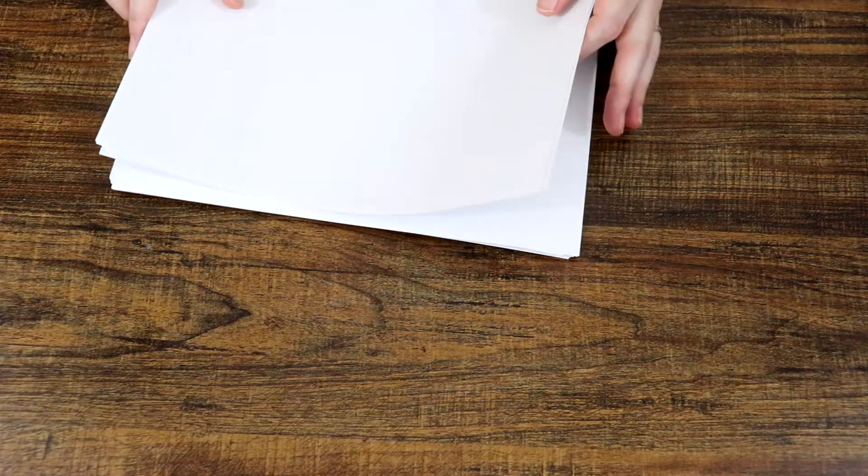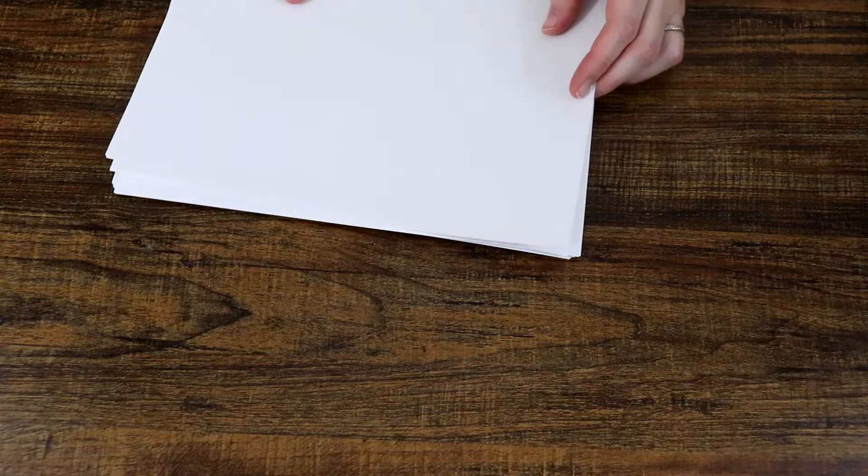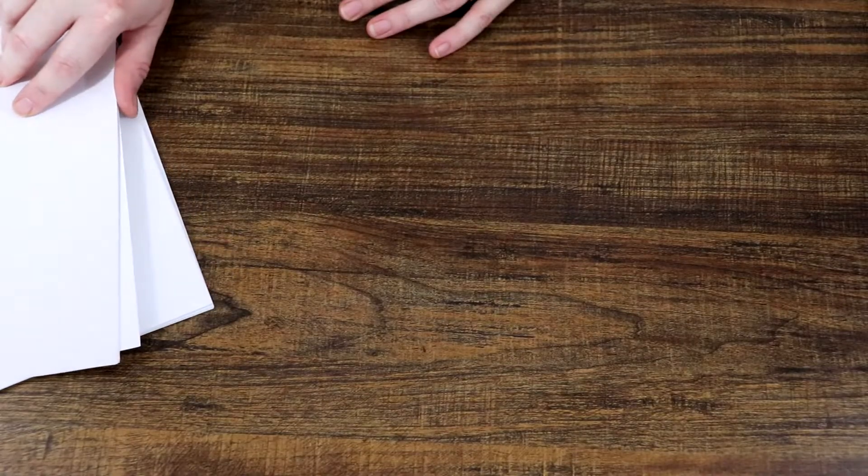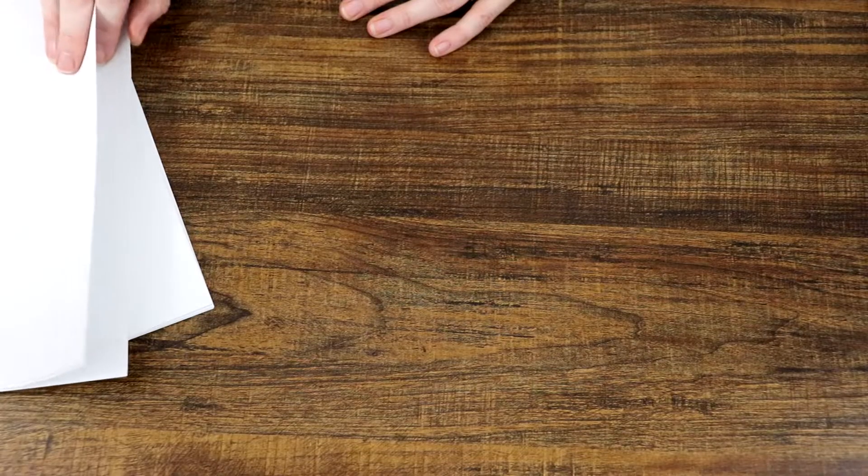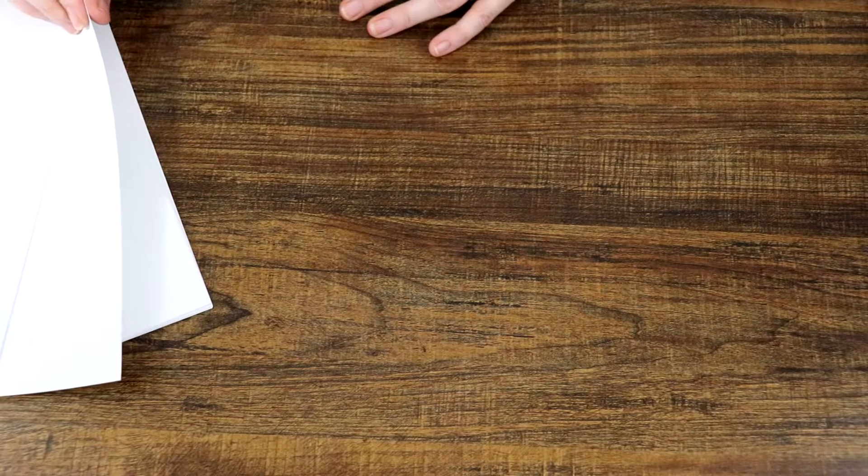Hey everybody, it's the Crafty Librarian here, and today I'm going to show you how to age paper. First thing you're going to need is paper. I've got a couple kinds here and I'll show you how each of them takes the dye differently. One is regular computer paper and the other is a thicker cardstock.